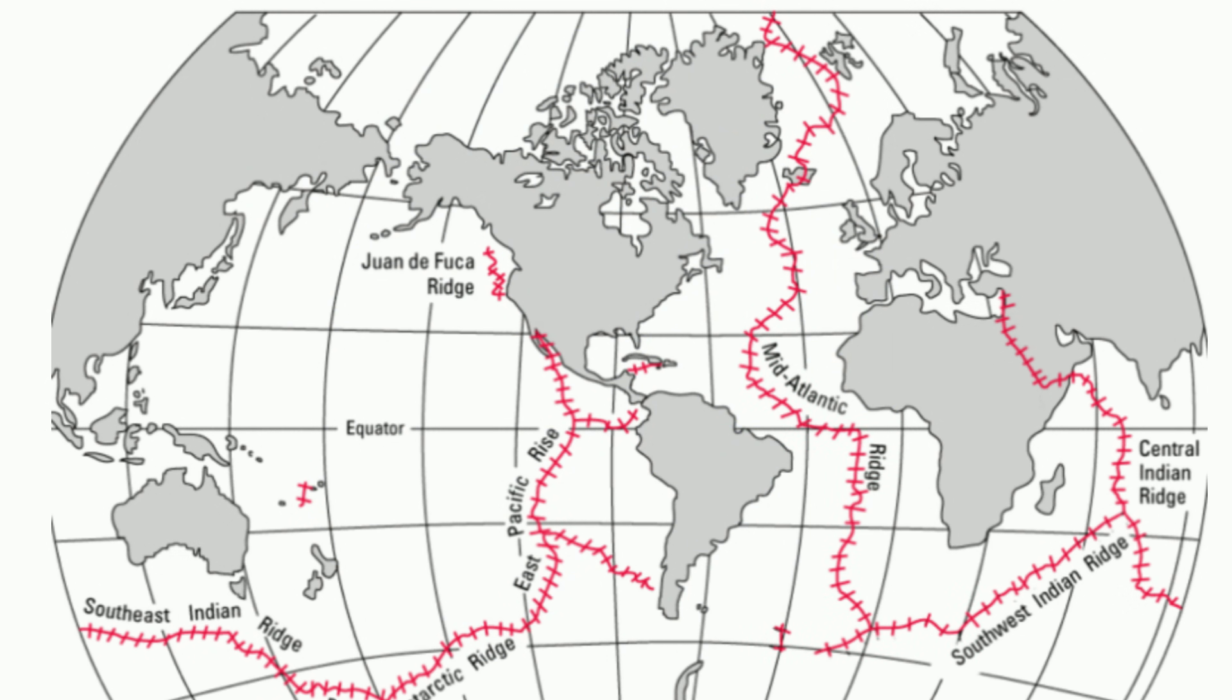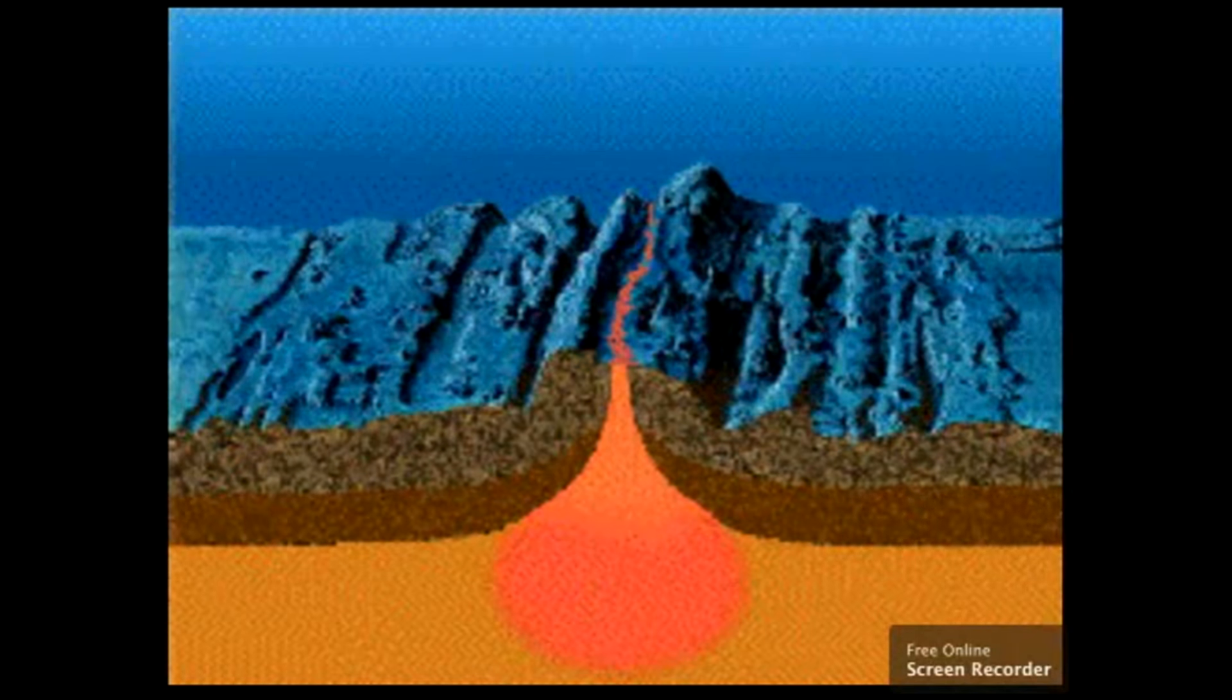The mid-ocean ridge can be seen here in red. Divergent boundaries are constructive boundaries because the rising magma creates new oceanic crust and lithosphere.